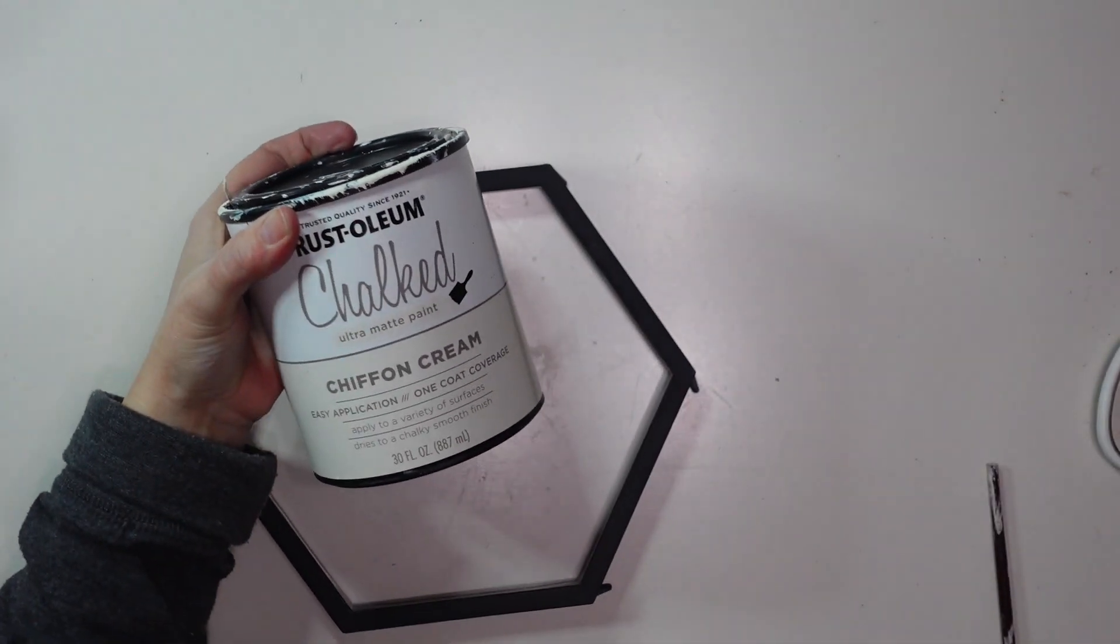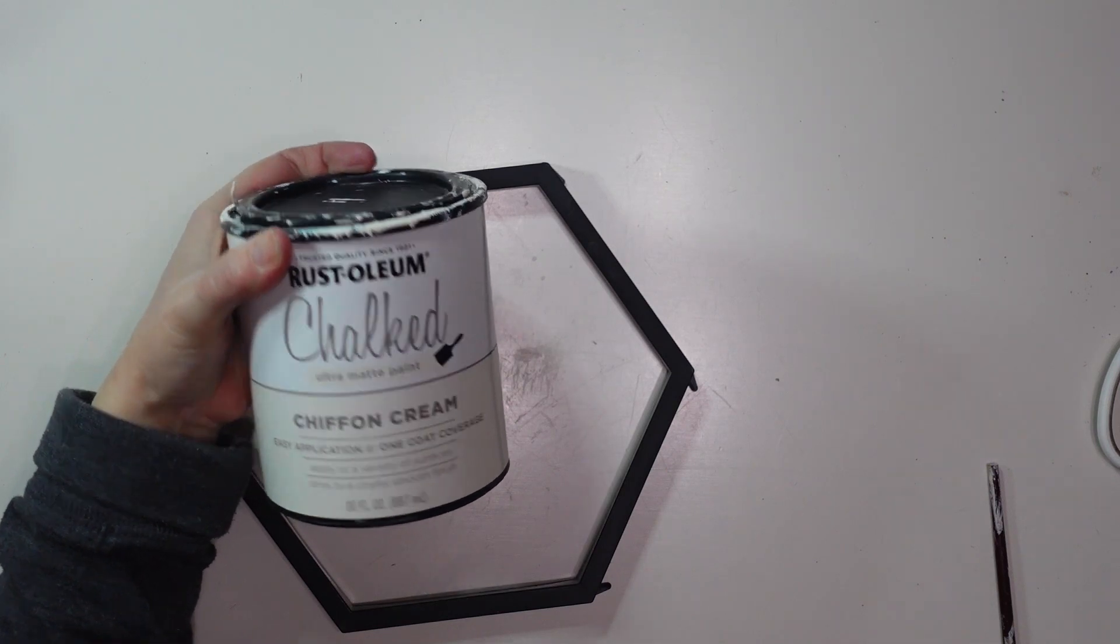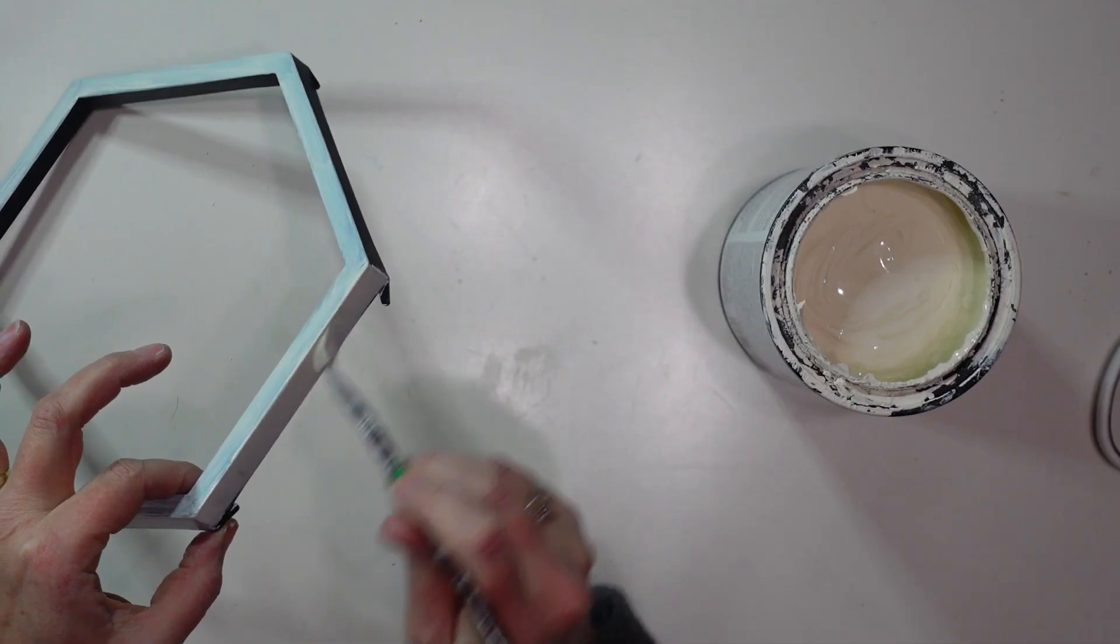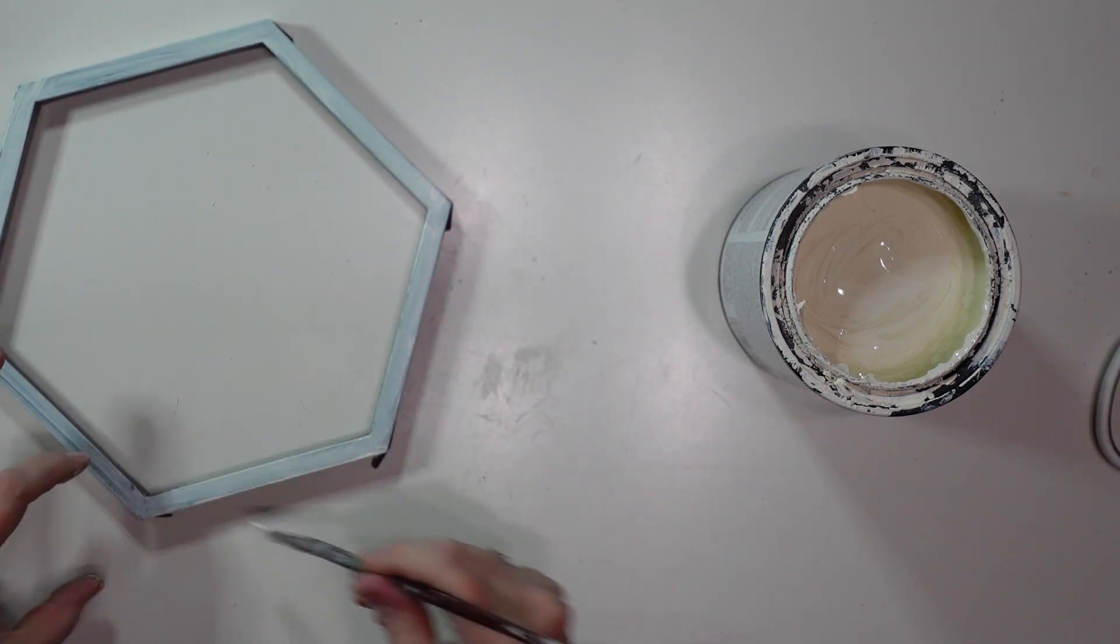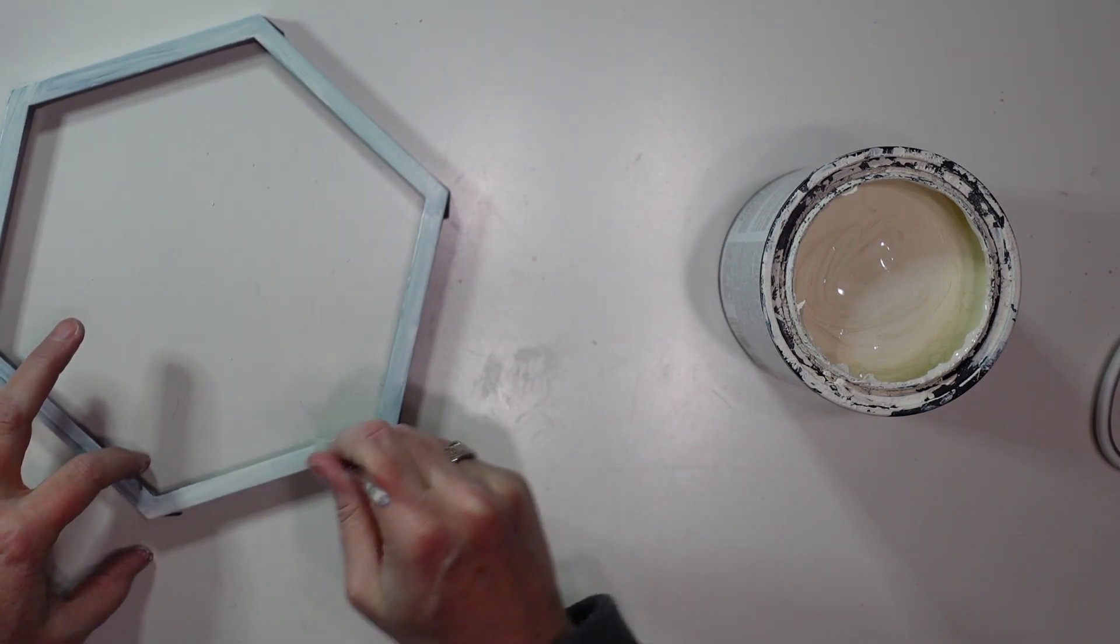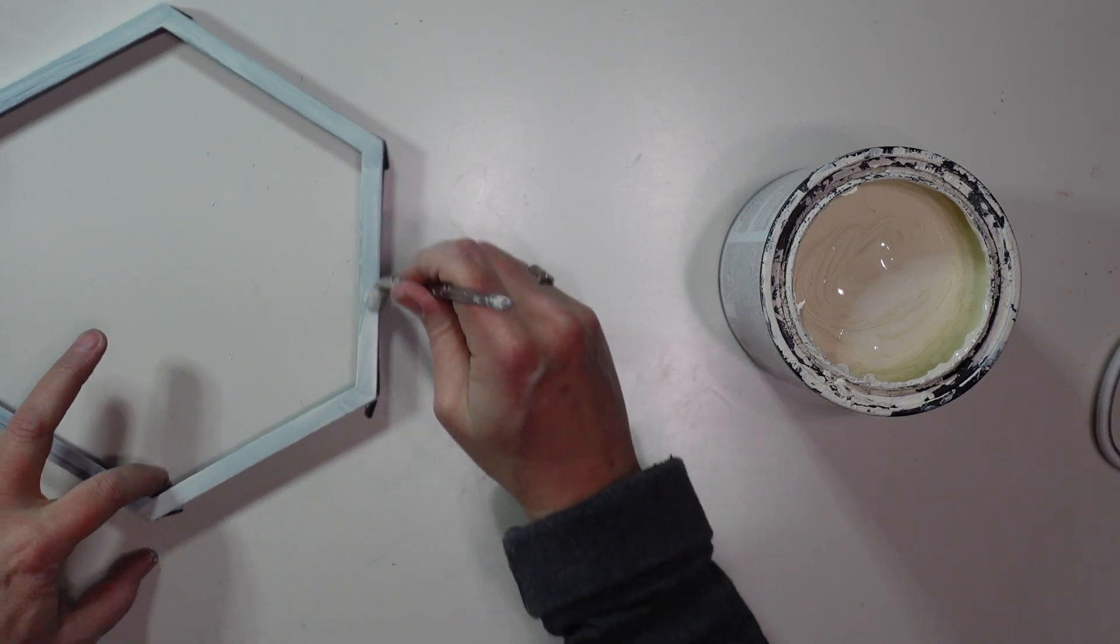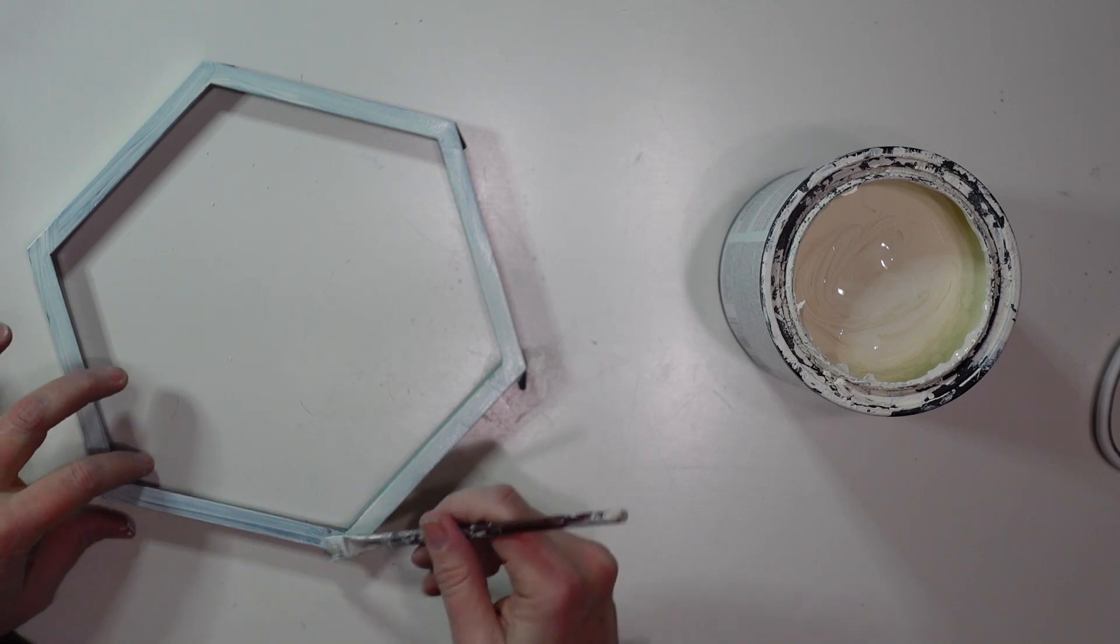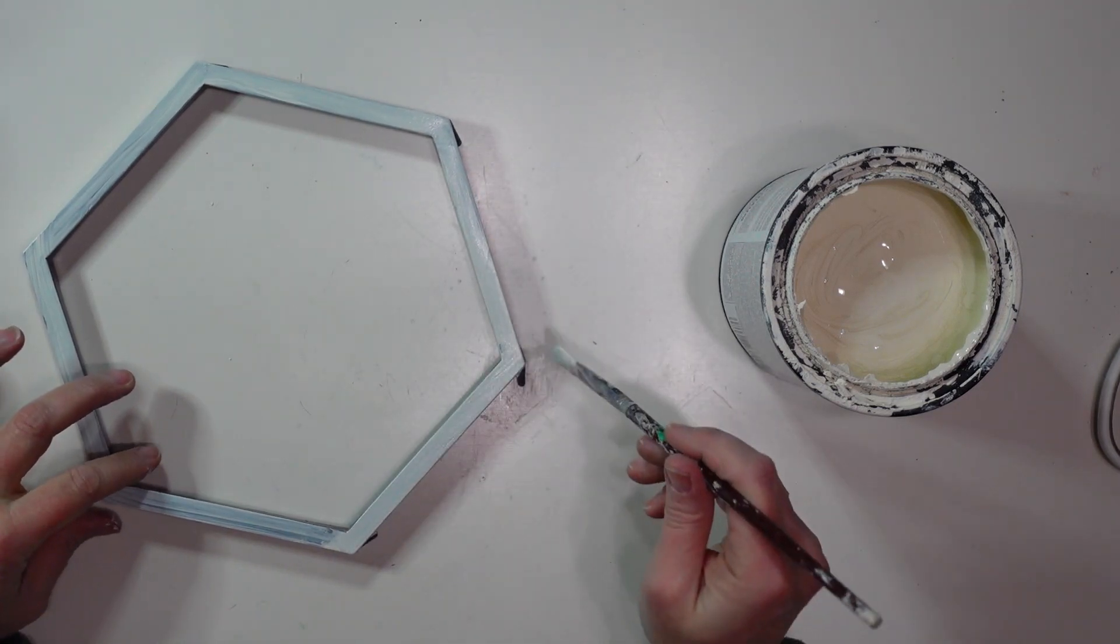I am going to paint my frame with some of this chiffon cream chalk paint. It is an off-white color. I would recommend sanding down the frame a little to rough it up so the paint sticks a little better. I didn't do that and I probably should have. But I am giving this kind of a rough coat because I do want some of the black to show through so that it looks like it is distressed.